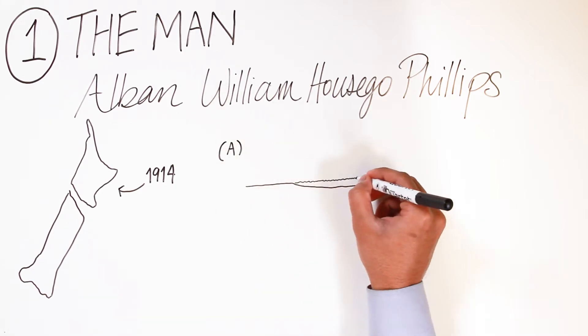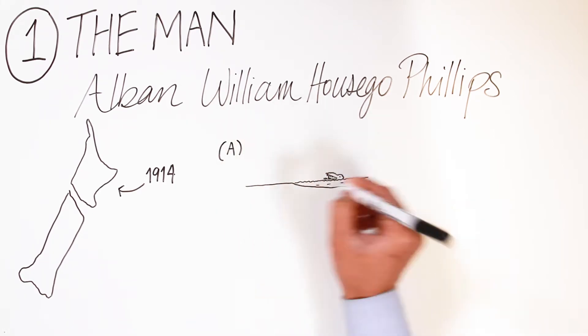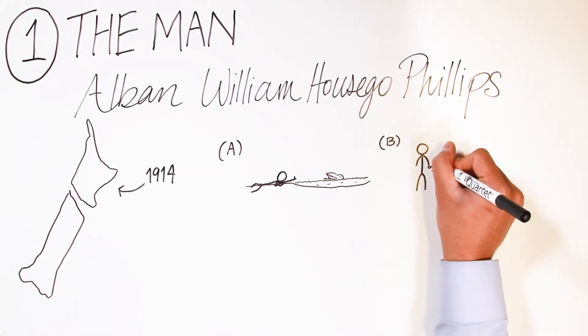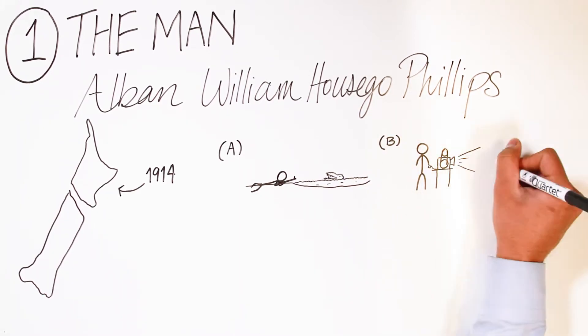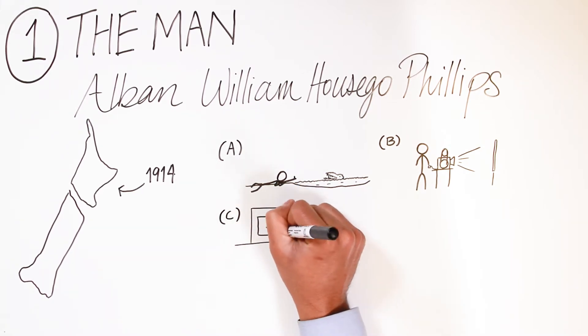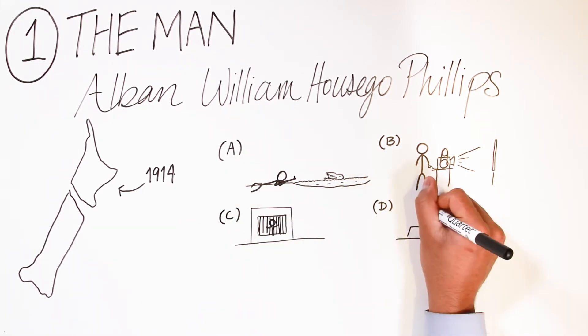Just to see how extraordinary this man, Bill Phillips, was, consider this question. Which occupation would appear on Bill Phillips' CV? A. Crocodile Hunter B. Cinema Manager C. Prisoner of War